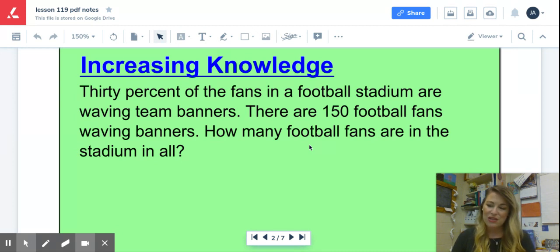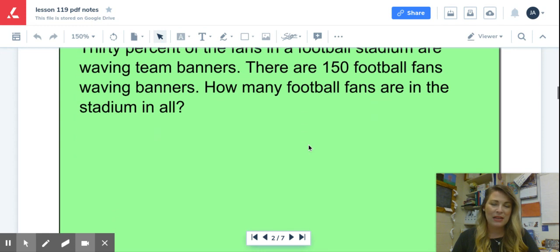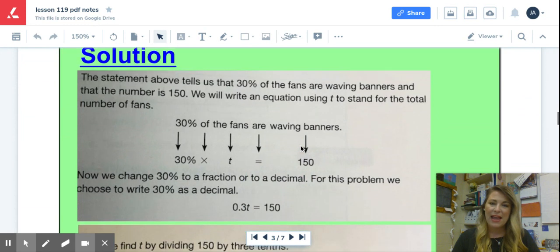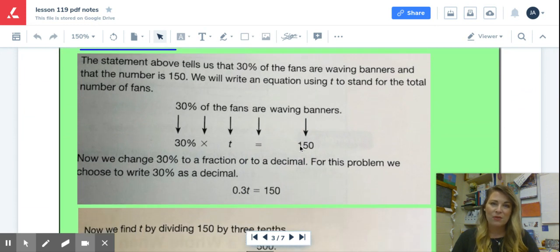For solving this, I'm actually just going to scroll down to the next page. I think they did a really nice job going word for word from your textbook on how to solve this. And this again is an example of how certain vocabulary in math means certain things. So let me break this down for you. The statement above tells us that 30 percent of the fans are waving banners and the number is 150. We will write an equation using t to stand for the total number of fans.